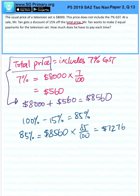And he wants to split this into two equal portions. So $7,276 divided by 2 will give us $3,638.